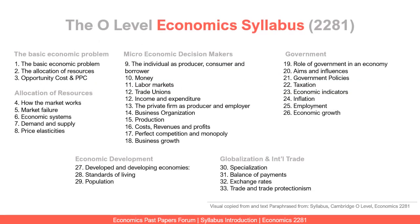The O-level Economics syllabus is divided into six parts: starting with the basic economic problem, then the allocation of resources, then the microeconomic decision makers, then the government, economic development, and finally globalization and international trade. There are 33 topics in all.